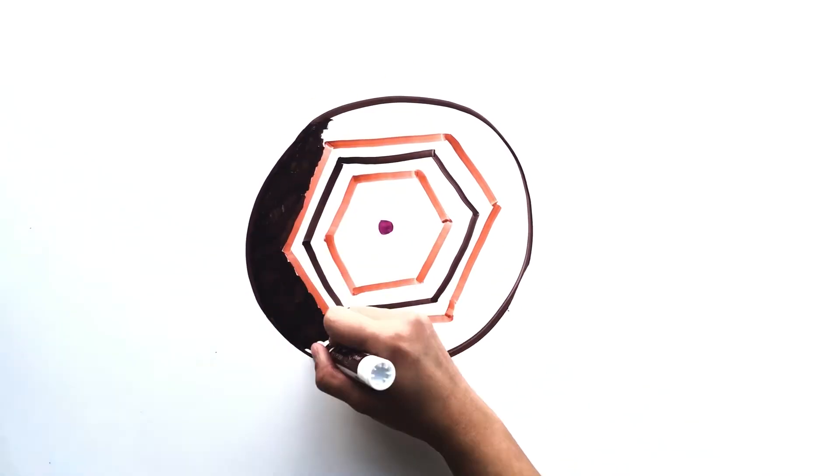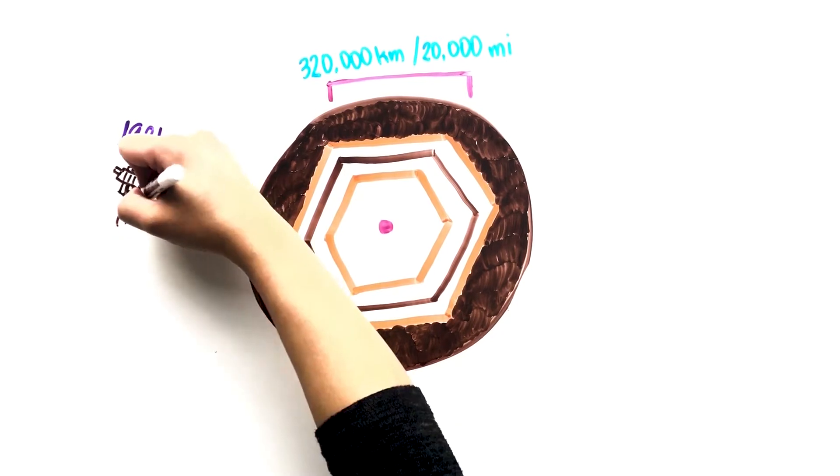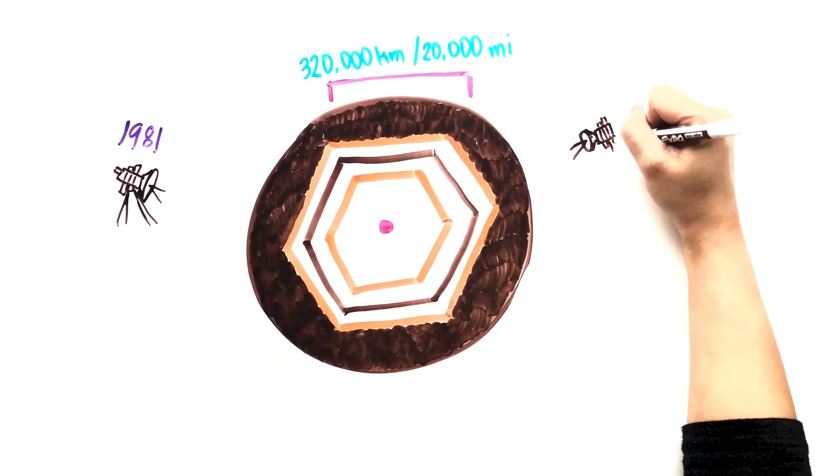At its north pole, a giant hexagon-shaped hurricane was discovered in 1981 by the Voyager mission and was later revisited by the Cassini mission in 2006.